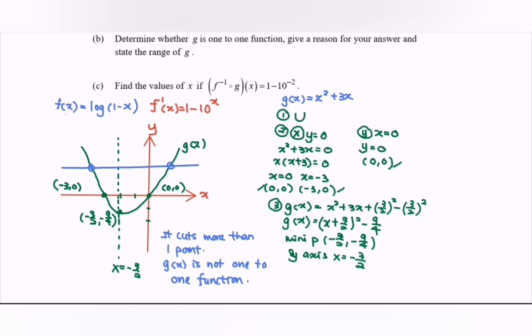State the range of g. For this case, referring to the graph or to the minimum point, the value of y starts from -9/4. So the range is negative 9 over 4 to infinity.